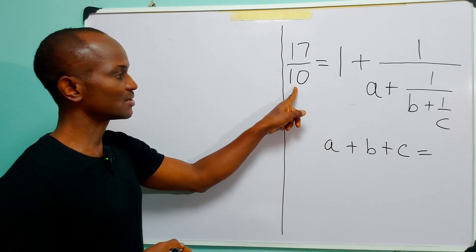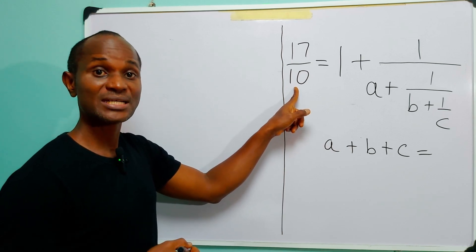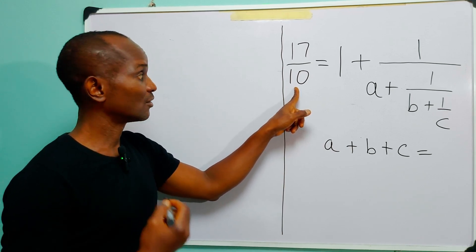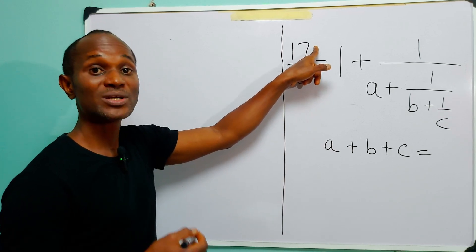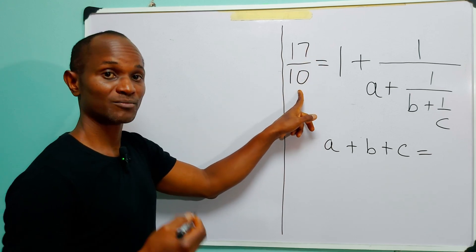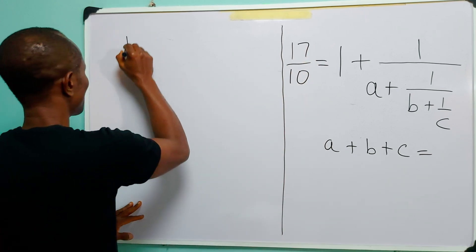Now without wasting time, let us look at this fraction. We can see that this fraction is an improper fraction, which simply means that the numerator is larger than the denominator. So we can write it in the form...